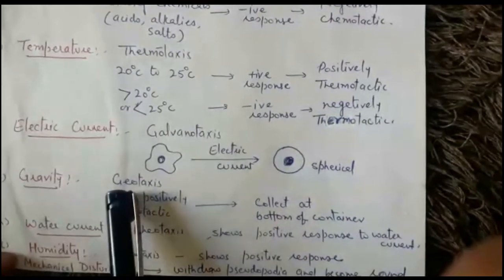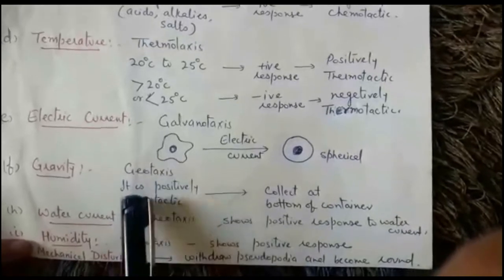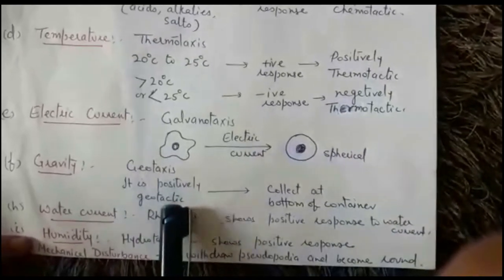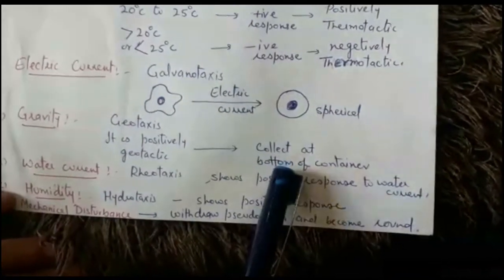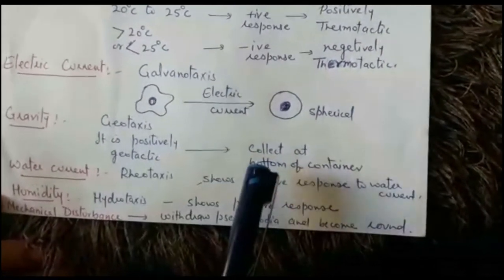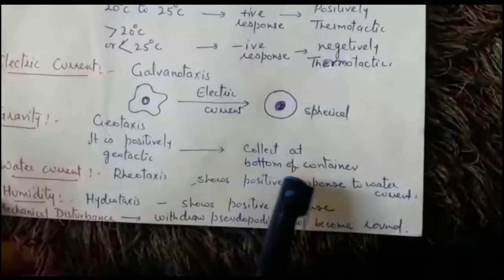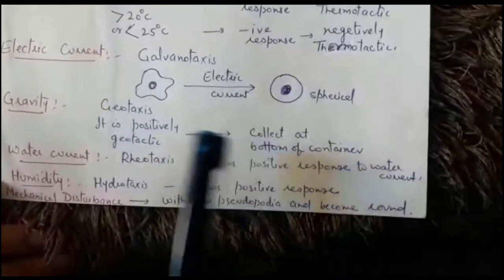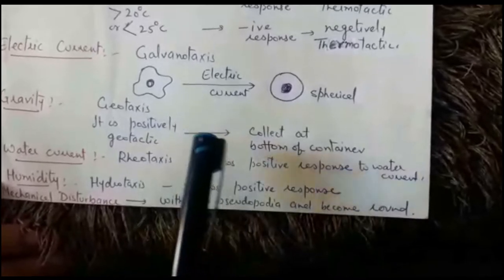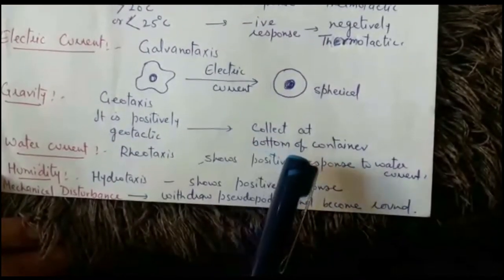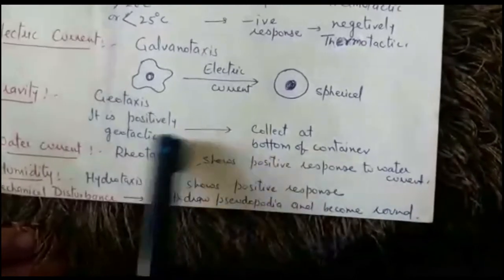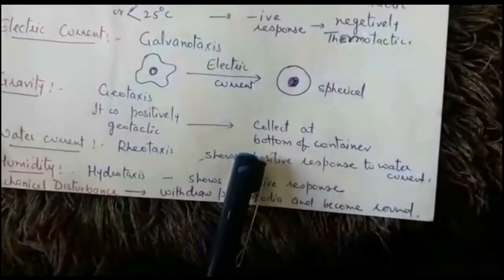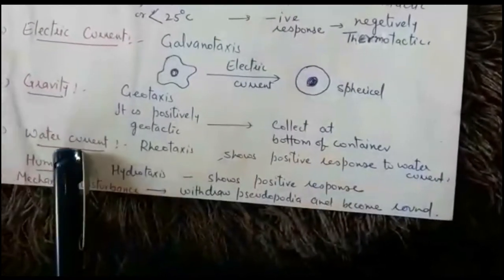Its response to gravity is known as geotaxis. Amoeba is positively geotactic, meaning it shows positive response to gravity. So amoeba will collect at the bottom of the container. When studying cultures or collecting droplets, you should take samples from the bottom of the container where the amoeba has gathered, because it is positively geotactic.